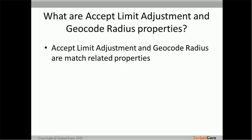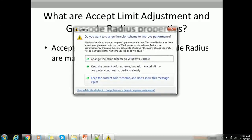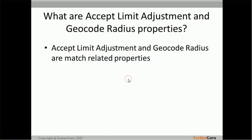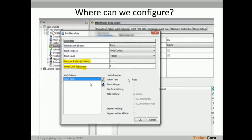Let's have a deep dive into these properties. Where can we configure the geocode radius and the accept limit adjustment properties? Whenever we configure the match settings, we configure the match properties, the path match columns, and then we finally create the match rules in the match rule sets tab, whenever we start to create any fuzzy match rule.